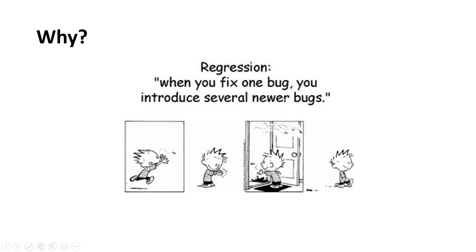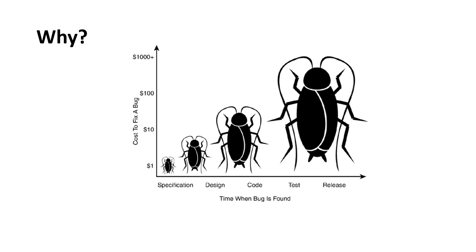Regression testing is also important. When we fix one bug, we have a tendency to introduce several other bugs. We need a way to quickly verify that after fixing a bug, our application has not suffered from any new bugs. We can use unit tests for this — we can run them right away after modifying the program and see if they fail or pass.